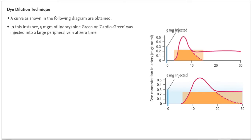In this instance, five milligrams of indocyanine green or cardio-green was injected into a large peripheral vein at zero time. Serial arterial samples were taken.